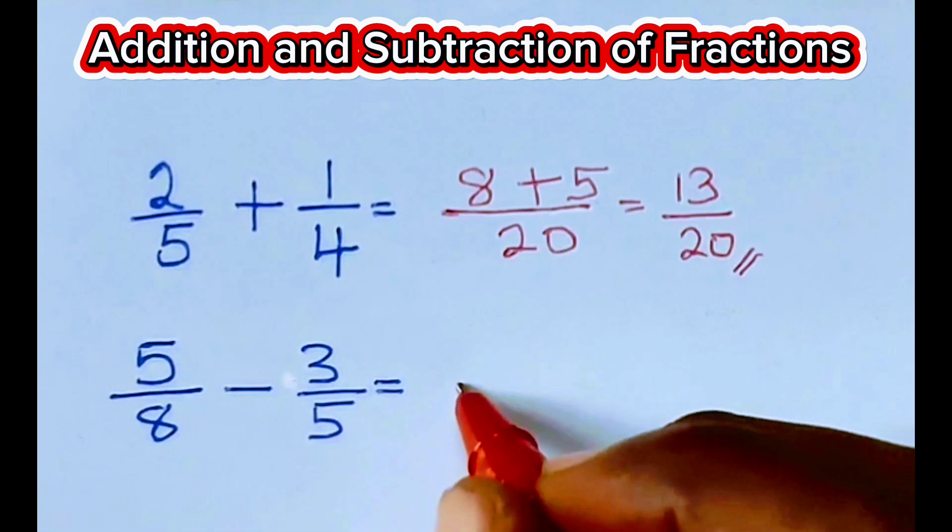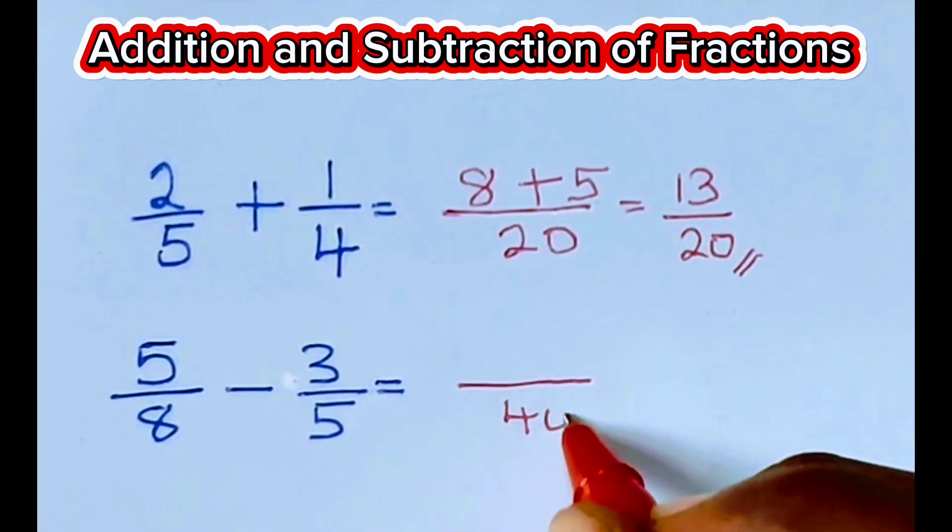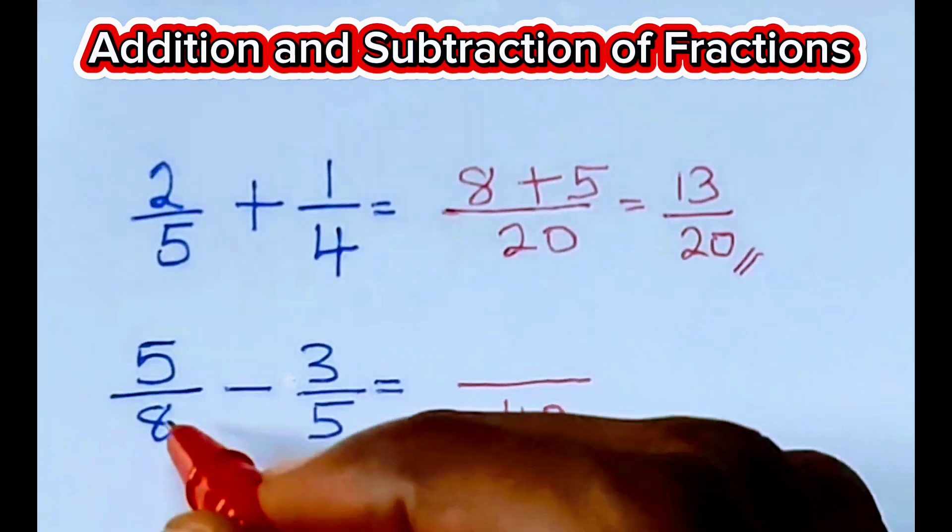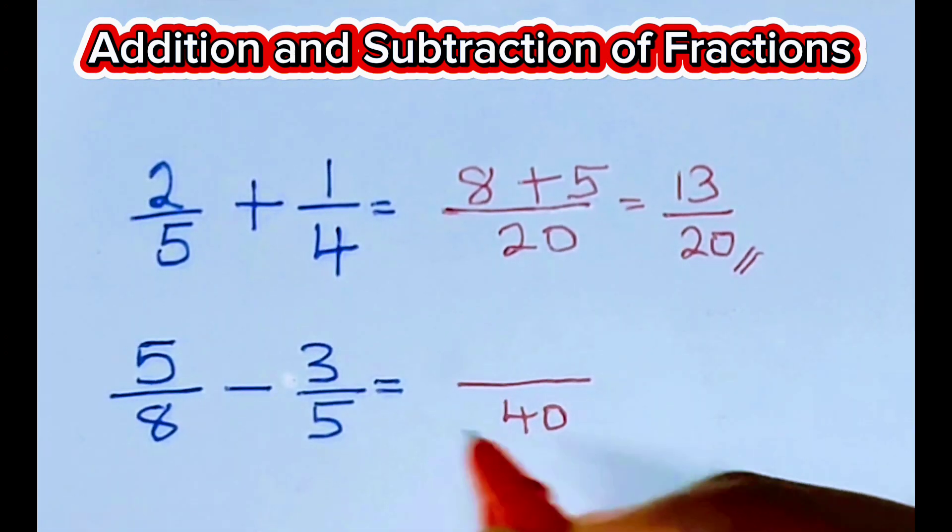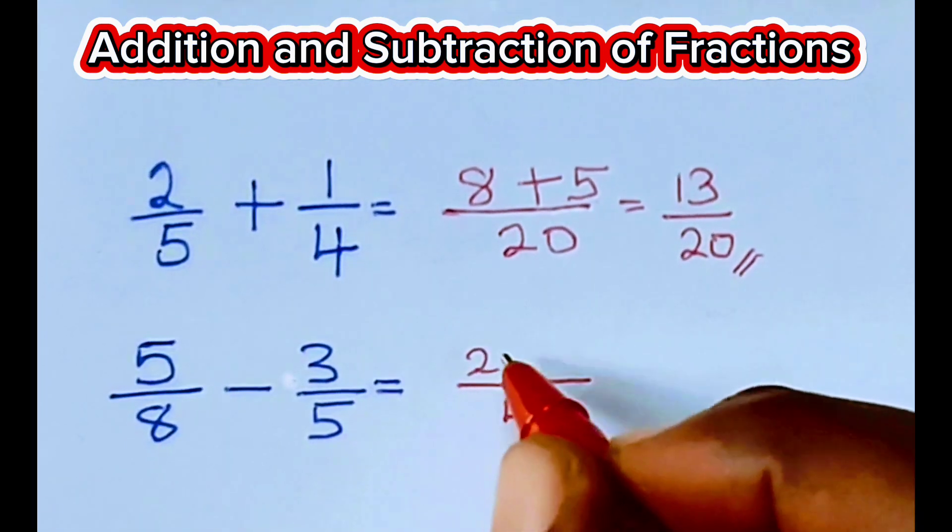We do the same thing here. Draw your line. The LCM of 8 and 5 is 40. 40 divided by 8 times 5. 40 divided by 8 is 5. 5 times 5 is 25.